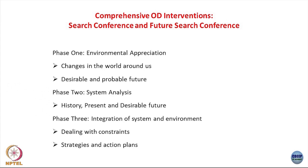Phase two is system analysis — history, present, and desirable future. They look at the history of the system, how they have evolved as a department or group in the last few years, and as a result, how they are currently functioning. They also look at what the desirable future means: how they should be behaving differently in future, what different measurements they need to follow, and what different processes and systems they need to implement to create the desired future or to survive in a future that is posing challenges currently.